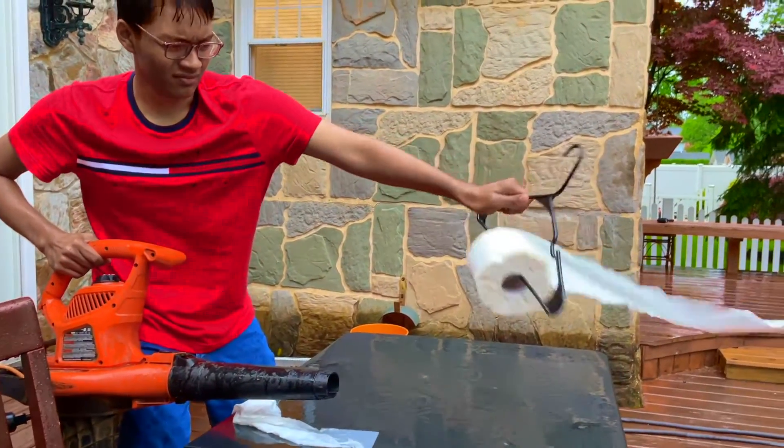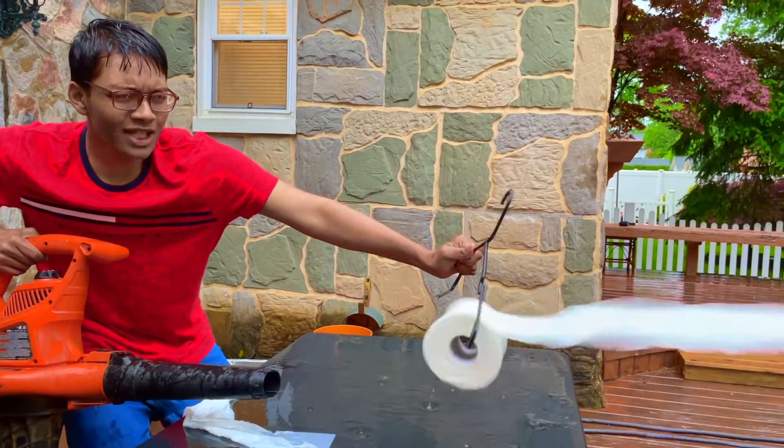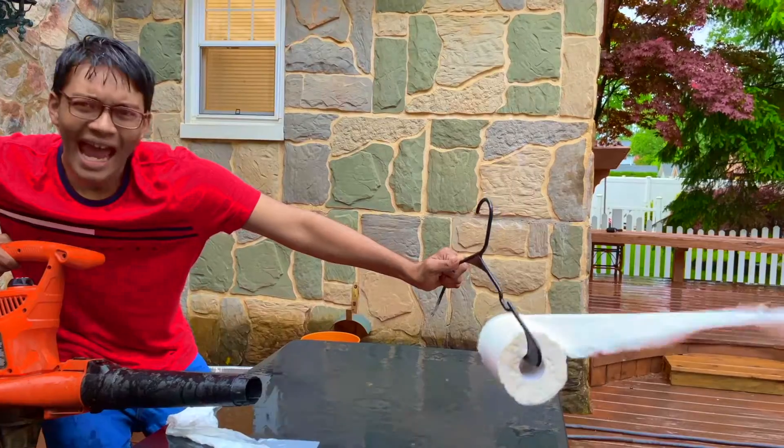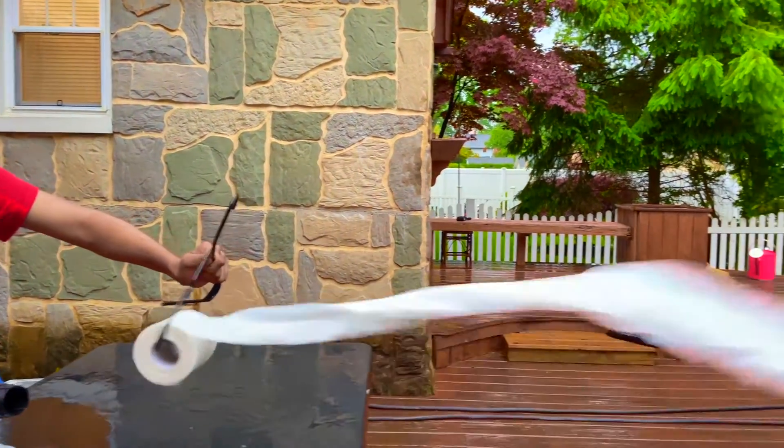This toilet paper is flying for the same reason airplanes fly, and that's because of Bernoulli's principle. What we have on the bottom is some low velocity air, right? So low velocity means high pressure via Bernoulli, and on the top, three, two, one.